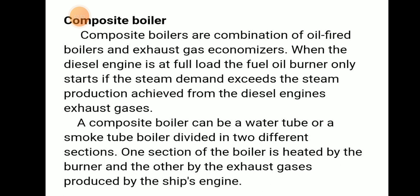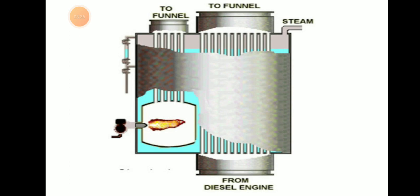A composite boiler can be a water tube or a smoke tube boiler, divided into two different sections. One section of the boiler is heated by a burner and the other by exhaust gas produced by the ship's engine. Here is a picture of a composite boiler.